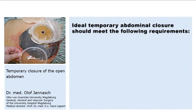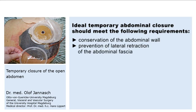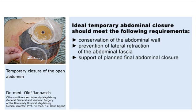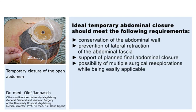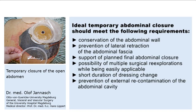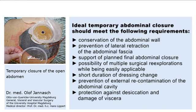The ideal temporary abdominal closure should meet the following requirements: conservation of the abdominal wall, prevention of lateral retraction of the abdominal fascia, support of planned final abdominal closure, possibility of multiple surgical re-explorations while being easily applicable, short duration of dressing change, prevention of external re-contamination of the abdominal cavity, and protection against desiccation and damage of viscera.